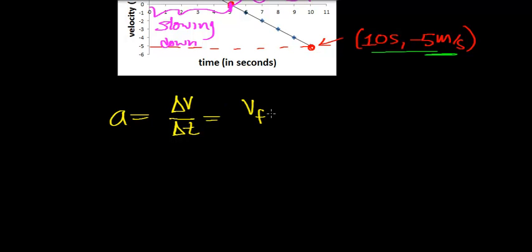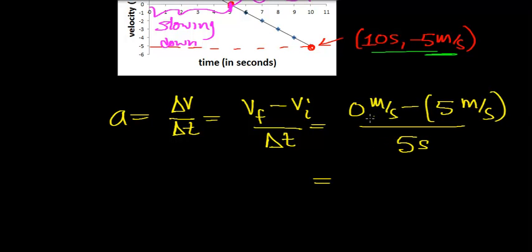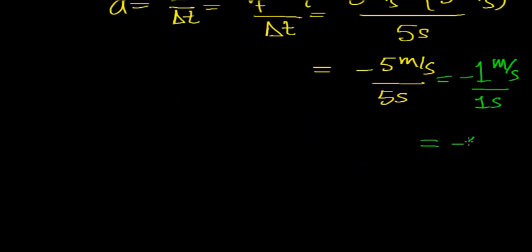This also equals the final velocity minus the initial velocity, divided by the time it takes to change that velocity. Using the points I selected, the final velocity over the first 5 seconds is 0 meters per second, minus the initial velocity of positive 5 meters per second, divided by 5 seconds. This works out to be 0 minus 5, which is negative 5 meters per second, divided by 5 seconds, giving negative 1 meter per second per second — or negative 1 meter per second squared.